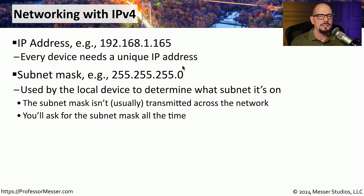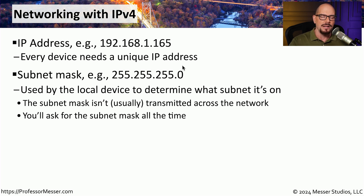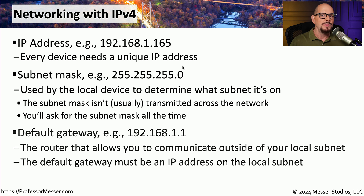The subnet mask isn't something that's usually transmitted across the network. Instead, it's used by your local device to determine what devices are local on this IP subnet and what IP addresses may be outside of this local IP subnet. This becomes especially important when you need to send traffic outside of your local subnet, which you do through the use of a default gateway.